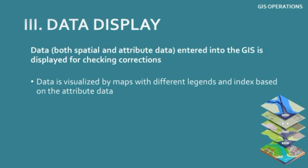The third operation, after entry of spatial and attribute data, is data display, so that you can check the attributes and spatial data. If you want to check whether a particular area was entered correctly, or whether the temperature of a city matches your exact data, you can check by data display. Data entered into GIS is displayed for checking and corrections, visualized by maps with different legends and indices based on the attribute data.